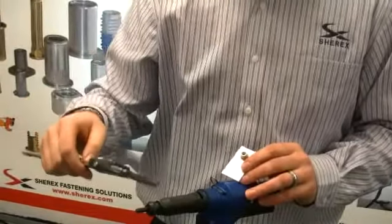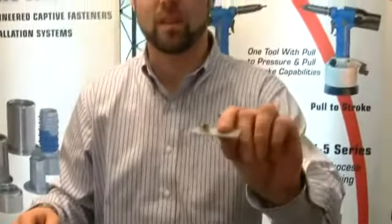Okay, we are now at 365 thousandths, so now we have a properly installed rivet nut.